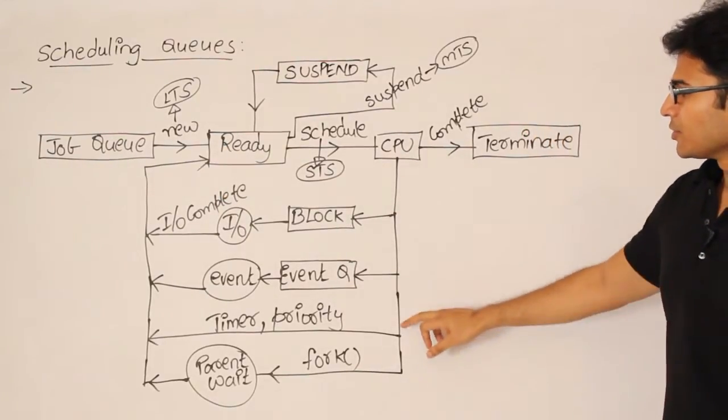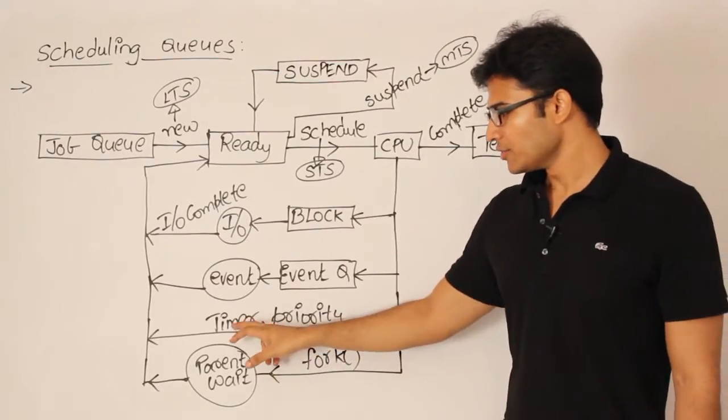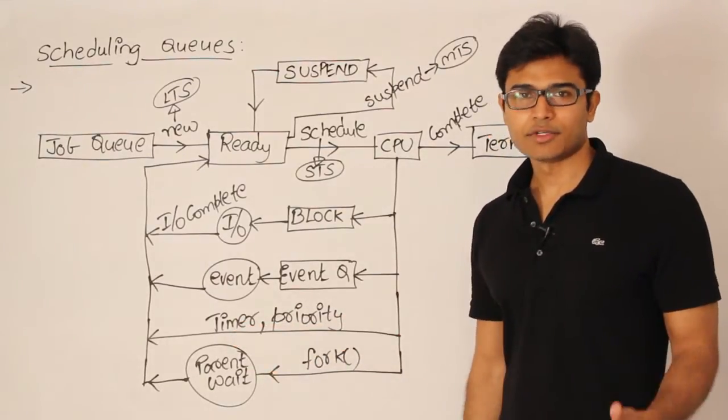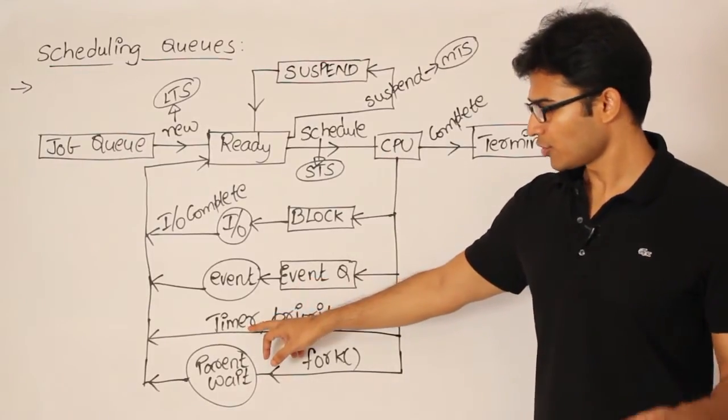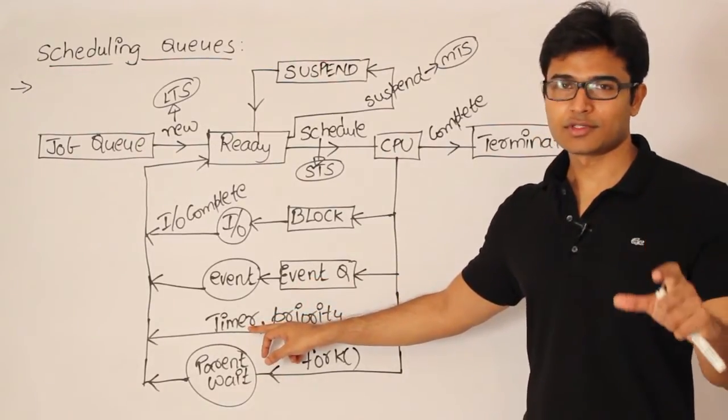And then sometimes what happens is, CPU will use its timer. So that in round robin I told you that there is a quantum time. So CPU is going to use, that process is going to wait for some time, execute for some time using quantum.